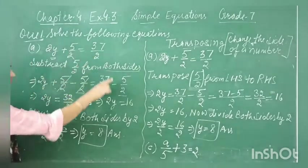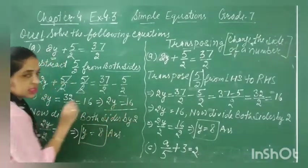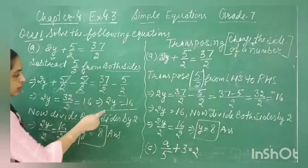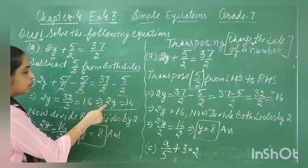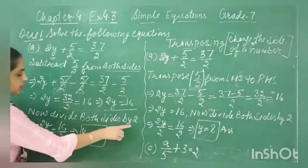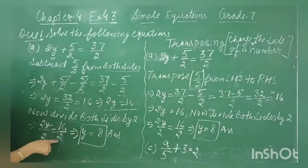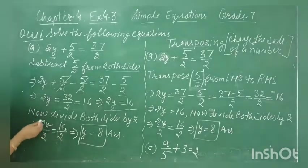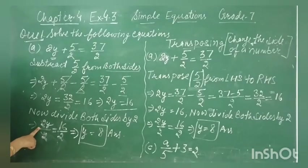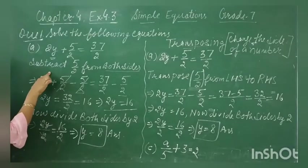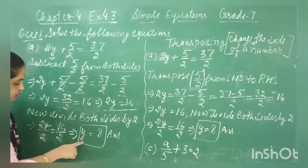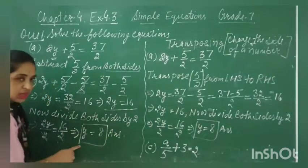After the first step, the equation becomes 2y is equal to 16. Now divide both sides by 2, because 2 is present in multiplication and the opposite of multiplication is division. So 2y divided by 2 equals 16 by 2; the 2s cancel out and we get y is equal to 8. This is the solution of the equation.